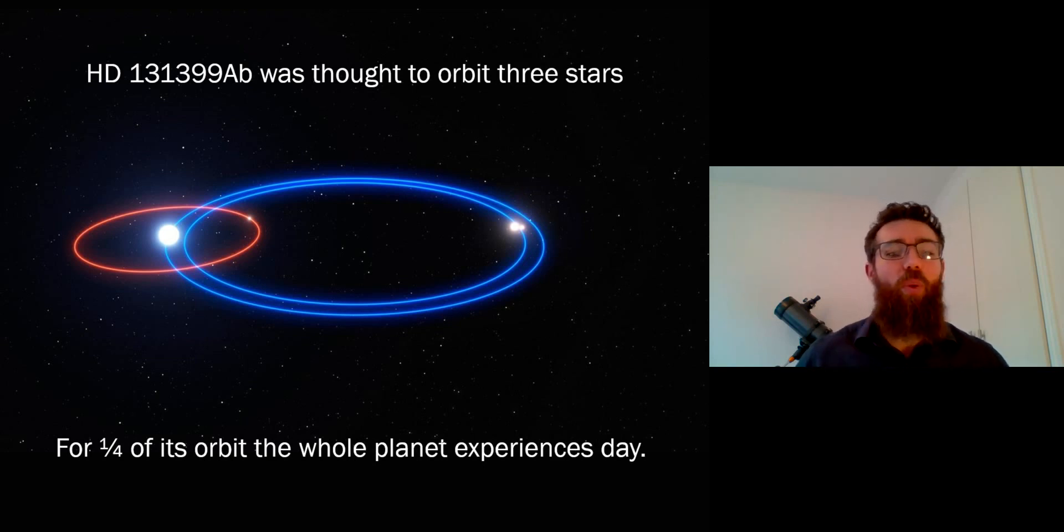Now if for one quarter of the whole orbit of that planet, would it be experiencing day? So the whole planet would be in daylight for one quarter of its orbit. So have a think about what the days and the seasons might be like on some of these unusual planets in these multiple star systems.